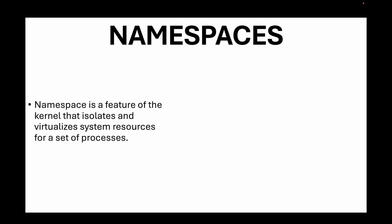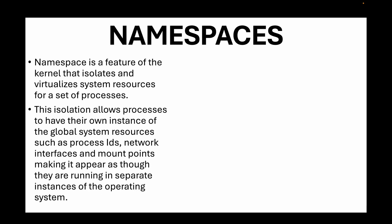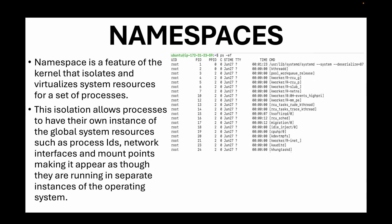Now let's look at namespaces in more detail. A namespace is a feature provided by the Linux kernel that helps you partition kernel resources. It puts a limit on what a process can see. There are many different namespaces — some common ones include the process ID namespace and the network namespace. Here I have a screenshot showing all running processes on a Linux EC2 instance after running ps -ef, with many processes starting from PID 1.